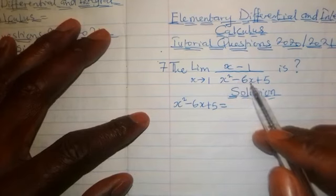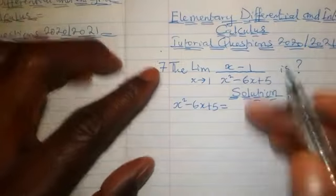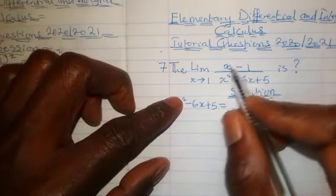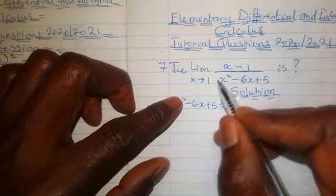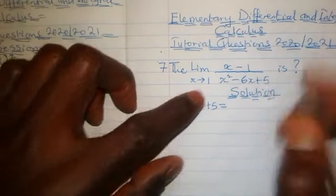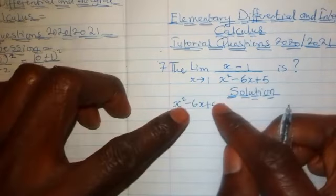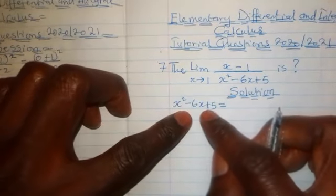Now the method we are going to use here first is to use the factor method to factorize this quadratic expression at the denominator. So we are going to start with the factorization of this denominator here. So we'll put it here, x²-6x+5.